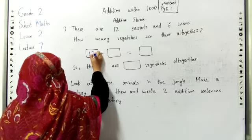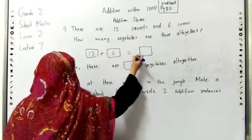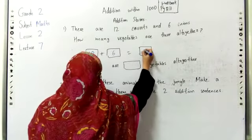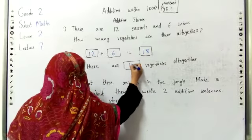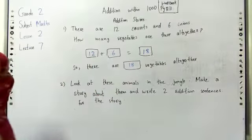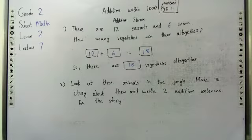Twelve carrots plus six onions is equal to eighteen. So there are eighteen vegetables together. Next is: look at these animals in the jungle. We will make a story about them.